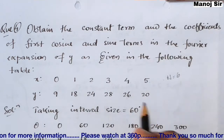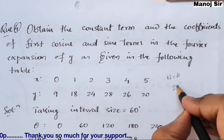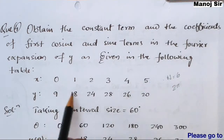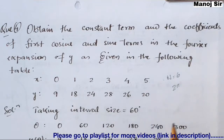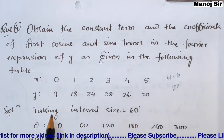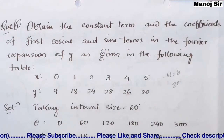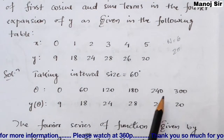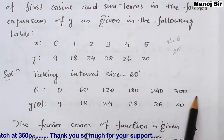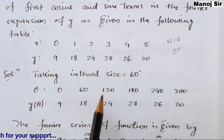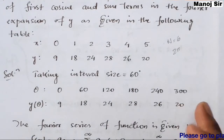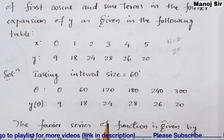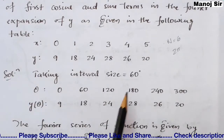Since nothing is given about the interval size, we take the total size as 2π, which is 360°. With N=6, the interval size is 2π/6 = 360°/6 = 60°. So we take theta values as 0°, 60°, 120°, 180°, 240°, and 300°. We do not write 360° because at that point y would repeat back to 9 — the values repeat from 360° onwards.